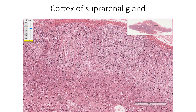Based on the arrangement of cells, the cortex is divided into three zones: an outer subcapsular narrow zone called zona glomerulosa, a thick middle zone constituting 80% of the cortical volume called zona fasciculata, and an inner zone thicker than zona glomerulosa called zona reticularis.